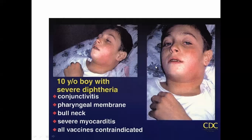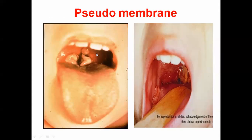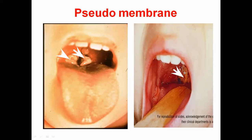This is a real case showing how the classical signs and symptoms look. You can see how this area looks — this is the grayish white pseudomembrane, clearly visible here as well. This is at the side of the cheek, near to the arch.